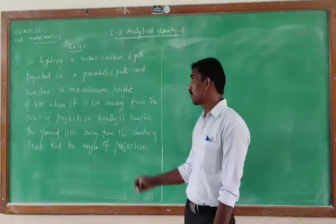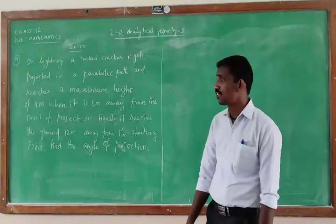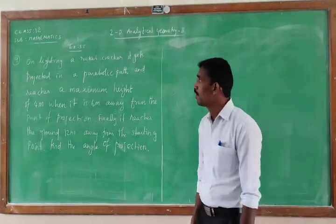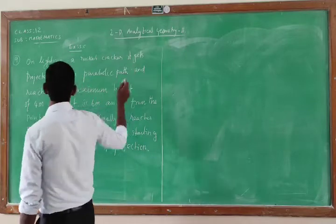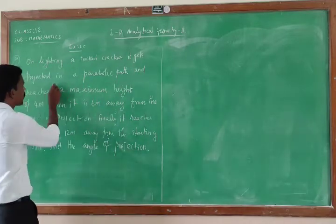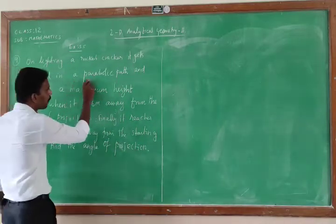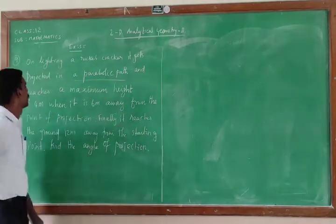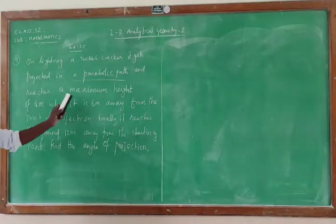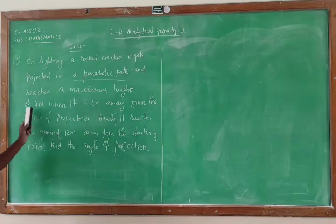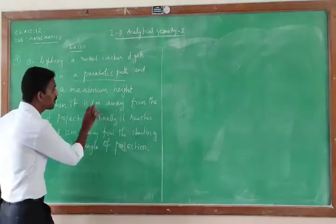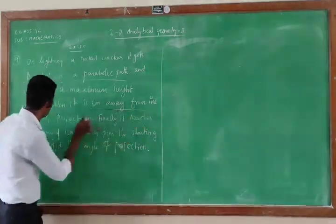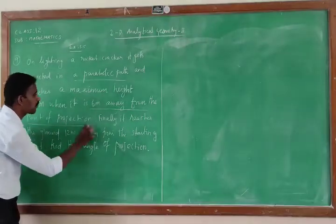This is exercise 6.5, question number 9. Unlike a rocket tractor, it does project in a parabolic path, and it reaches a maximum height of 4 meters when it is 6 meters away from the point of projection.